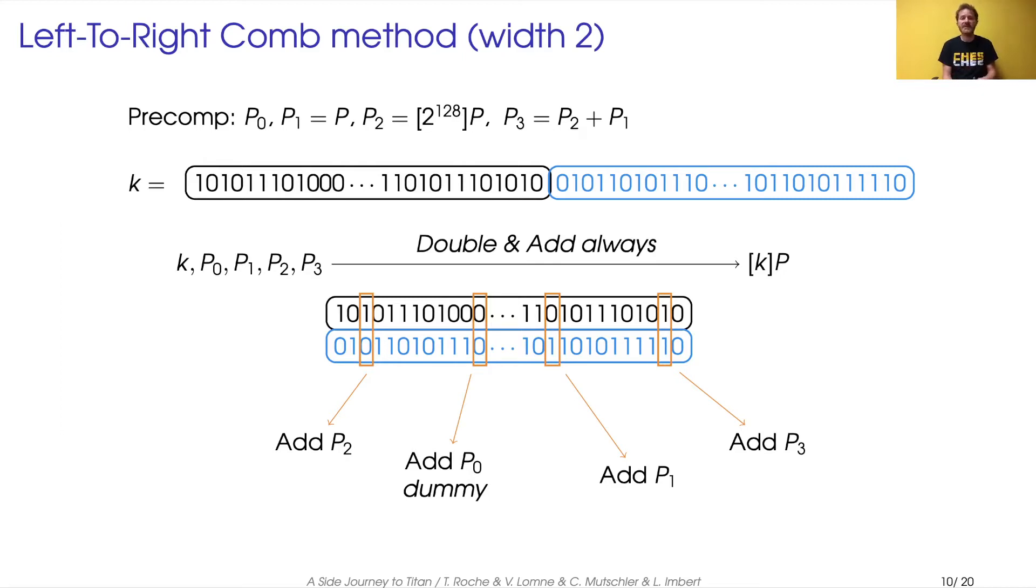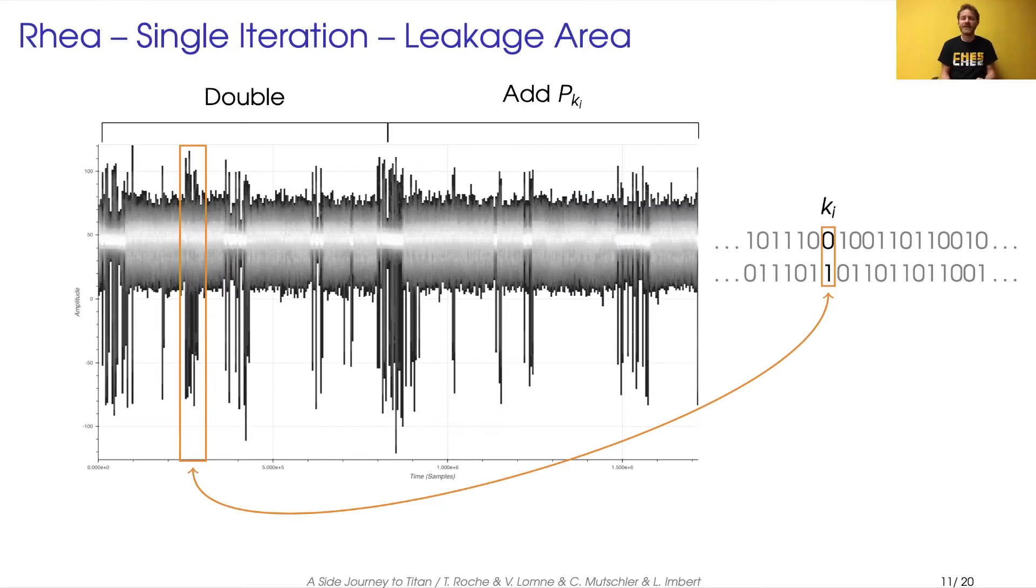And from these inputs, the double-and-add-always algorithm will process two bits by two bits. And for each iteration, it will execute a double operation on the elliptic curve, and then an addition to a pre-computed point. The pre-computed point is chosen based on the value of the current two bits of the nonce of the scalar.